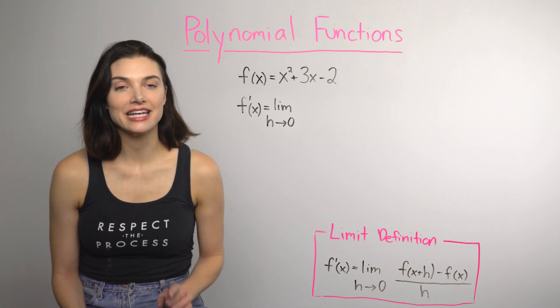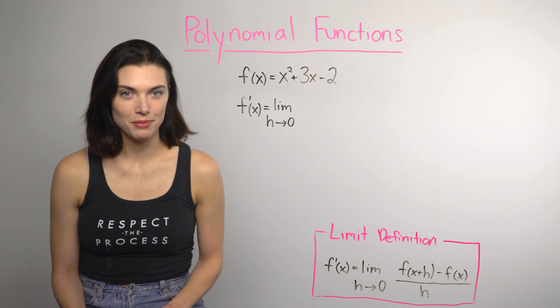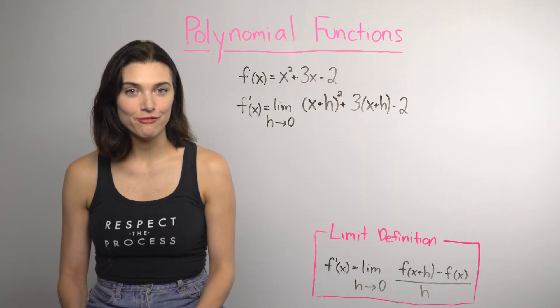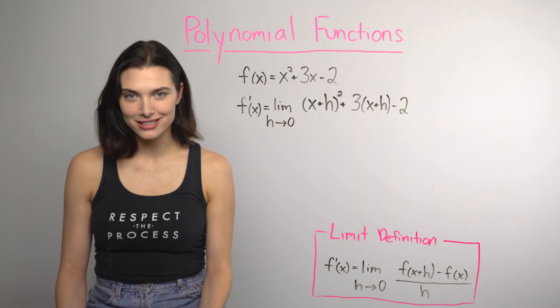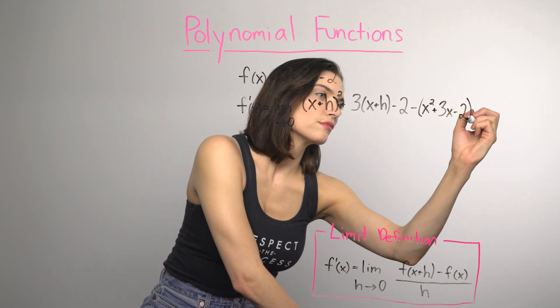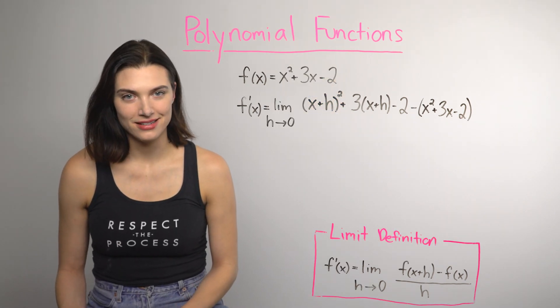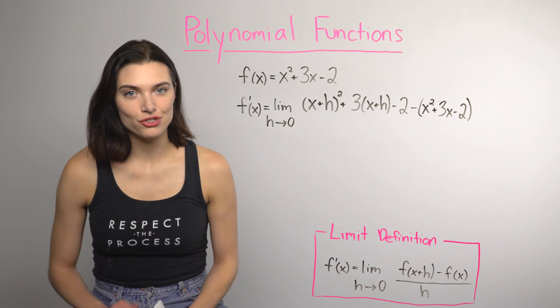So, we'll start by finding f of x plus h by plugging x plus h in for x into the function. Now, for negative f of x, we'll just subtract the original function. I think it's really helpful to put everything from the function into parentheses here, so that you distribute the negative to all the terms.